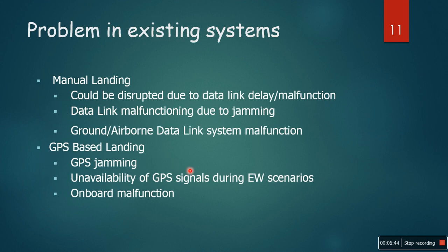Problems in existing systems: Manual landing can be disrupted due to data link delay and data link malfunction due to jamming. Ground and airborne data link systems can malfunction — for example, the hardware on the receiver or transmitter on the aircraft can malfunction. GPS-based landing is vulnerable to GPS jamming, unavailability of GPS during electronic warfare scenarios, and on-board malfunction of the GPS device.